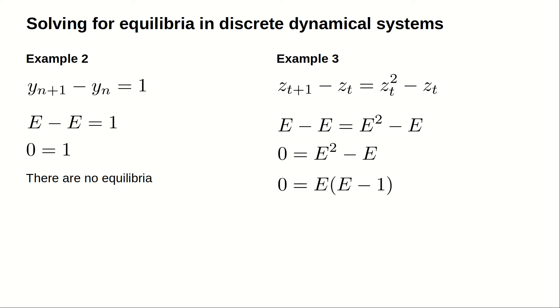One of the two factors must be 0, so either E equals 0 or E minus 1 equals 0. The equilibria are E equals 0 and E equals 1. Both z sub t equals 0 and z sub t equals 1 are constant solutions to the dynamical system.